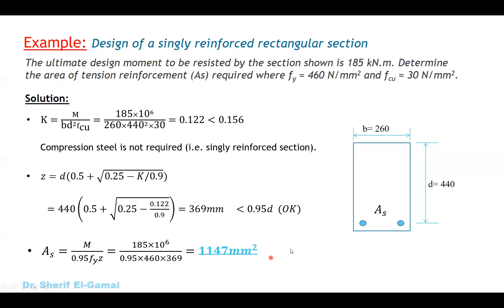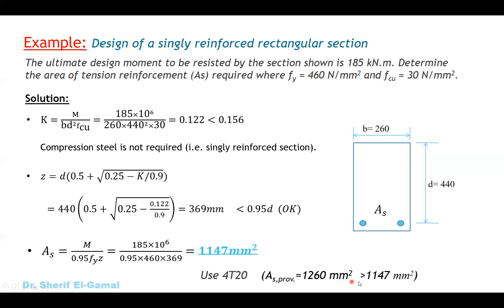The required reinforcement area is 1147 millimeter squared. From this, we choose four bars of diameter 20 mm, written as 4T20, where T refers to high-yield steel bars with F yield 460. The As provided by 4T20 is 1260 millimeter squared, which is greater than the As required. The sketch shows four bars placed in the tension side of the section, labelled 4T20. This concludes today's video.